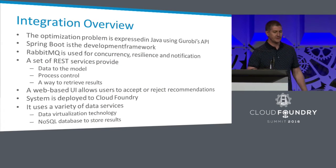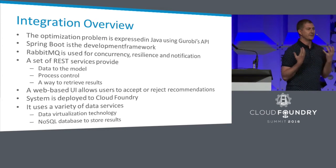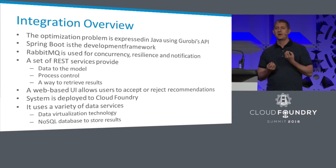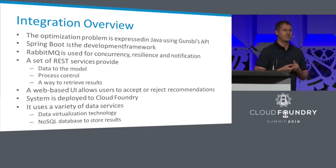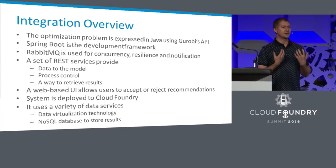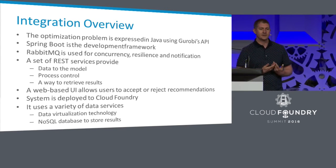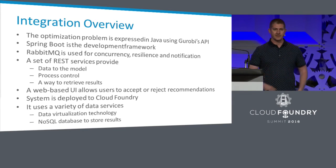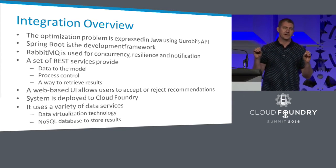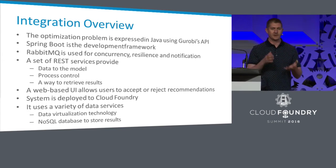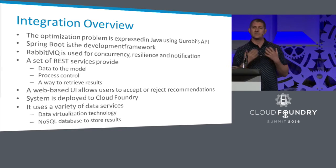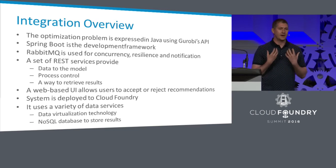One thing I haven't mentioned yet is data virtualization. At a company like Gap, we have a lot of very different data sources that have been around for a very long time, and we need to impose some order on this chaos. One technology we use is data virtualization — it provides an interface layer across DB2, Oracle, MySQL, MongoDB, and whatever else we have. It allows us to expose an interface layer that looks very much the same across brands, and for us that has been very powerful.